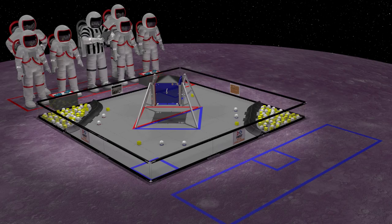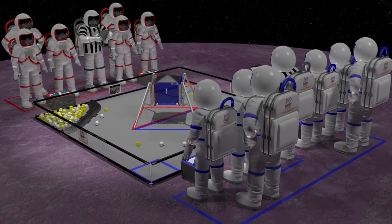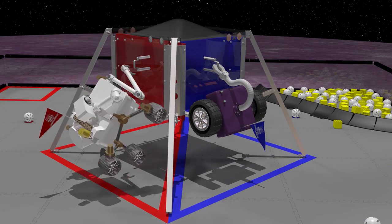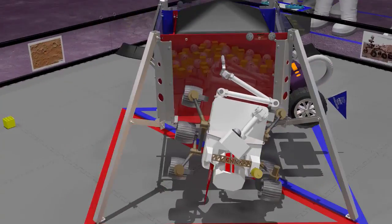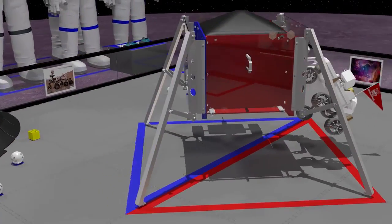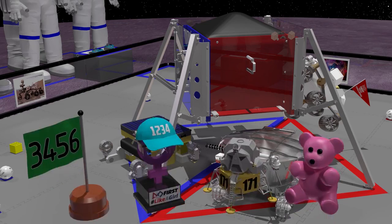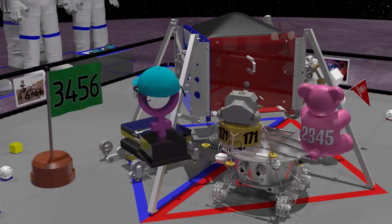Prior to the start of the match, robots may be latched onto the lander. Robots that cannot be latched must start in the alliance's landing zone. Robots may also be preloaded with a team marker. Teams may be as creative as they would like with their marker designs.